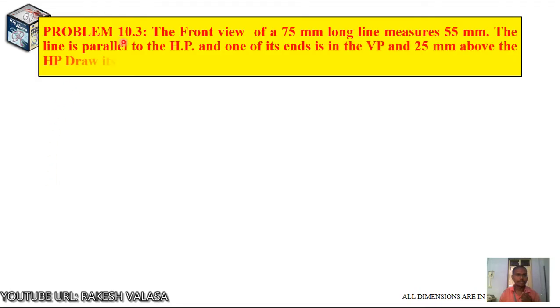Problem number 10.3: The front view of a 75mm long line measures 55mm. The line is parallel to the HP and one of its ends is in the VP and 25mm above the HP. Draw its projections of the line and determine its inclination with VP.